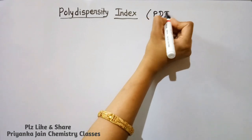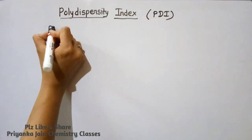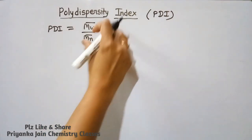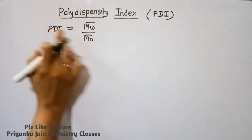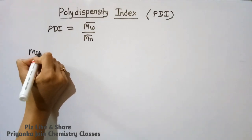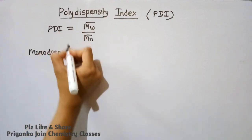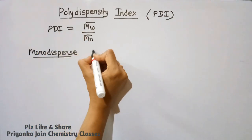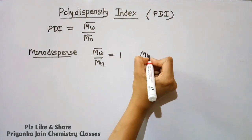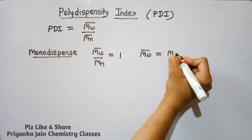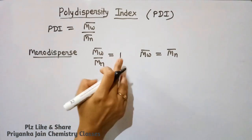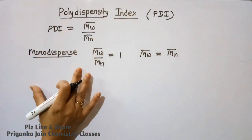Another important concept is the polydispersity index (PDI), which is simply the ratio of weight average molar mass to number average molar mass: PDI = Mw / Mn. For a monodispersed sample, PDI = 1, meaning Mw = Mn. For a didispersed sample, PDI = 2.